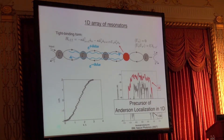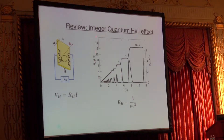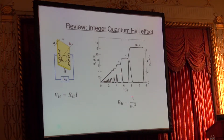So what should we do to get around Anderson localization? Add a magnetic field. What happens in an electronic system when we add a magnetic field in a two-dimensional electron gas? We apply a voltage and measure the current in the transverse direction. The Hall resistivity as a function of magnetic field has these plateaus that are very robust — they don't depend on the details of the system, the amount of impurity, or temperature. The location of these plateaus is given by some fundamental constant divided by an integer due to topological robustness.